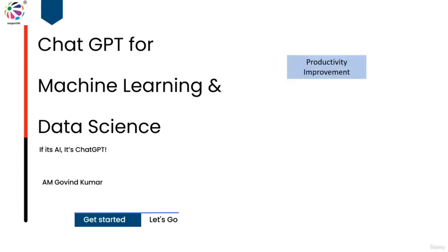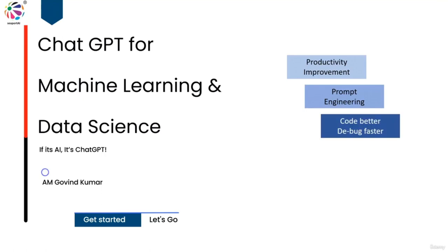The primary focus of the program is on improving your productivity as a data scientist and machine learning engineer. You can apply the art and science of prompt engineering to code better and debug faster. A cornerstone of this program is the focus on data privacy. In an era where ChatGPT has been integrated into a multitude of plugins and applications, understanding and tackling privacy challenges is of paramount importance.